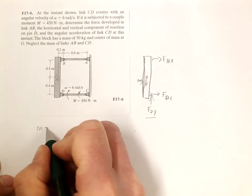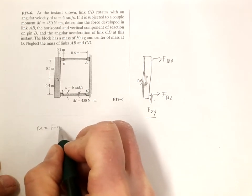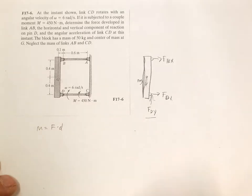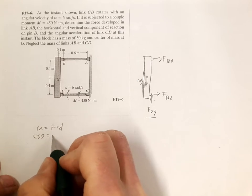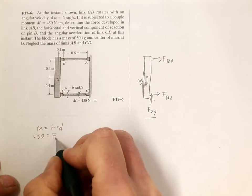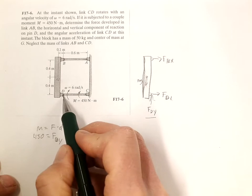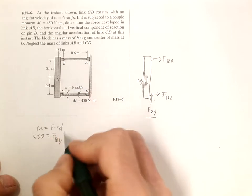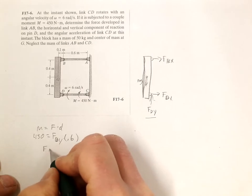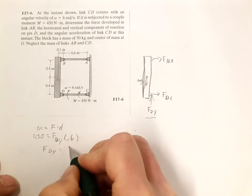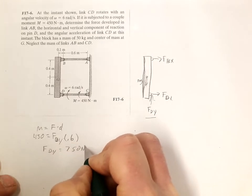The moment is equal to the force times the distance, and the moment is 450, the force is FDY, and the distance is the length here which is 0.6. So FDY is equal to 750 newtons.